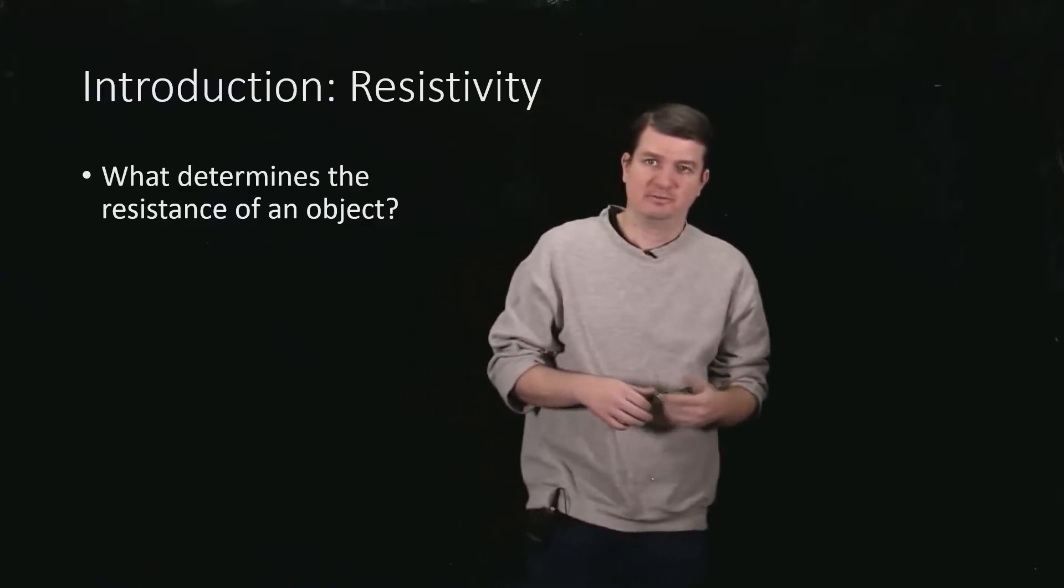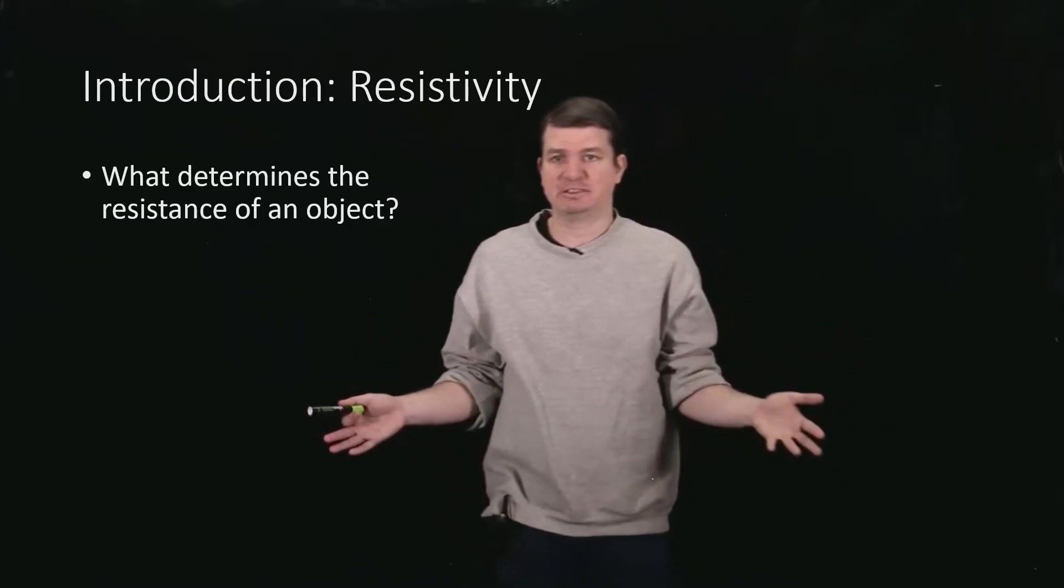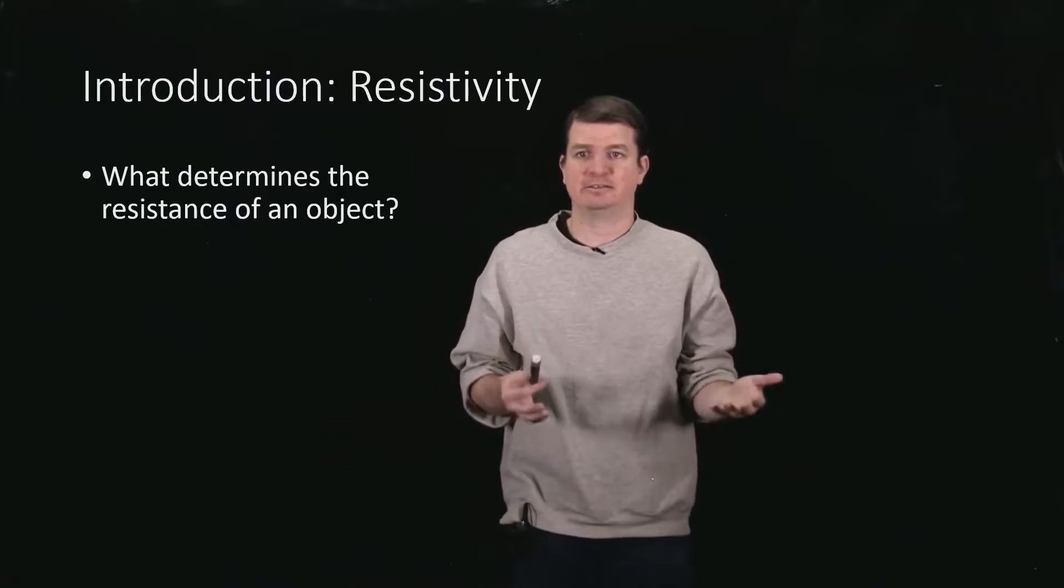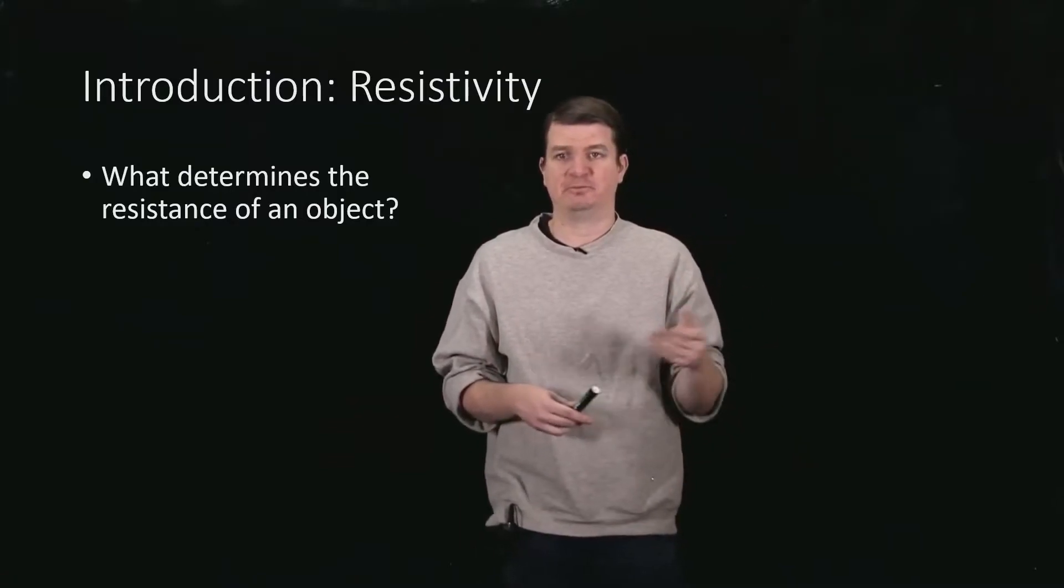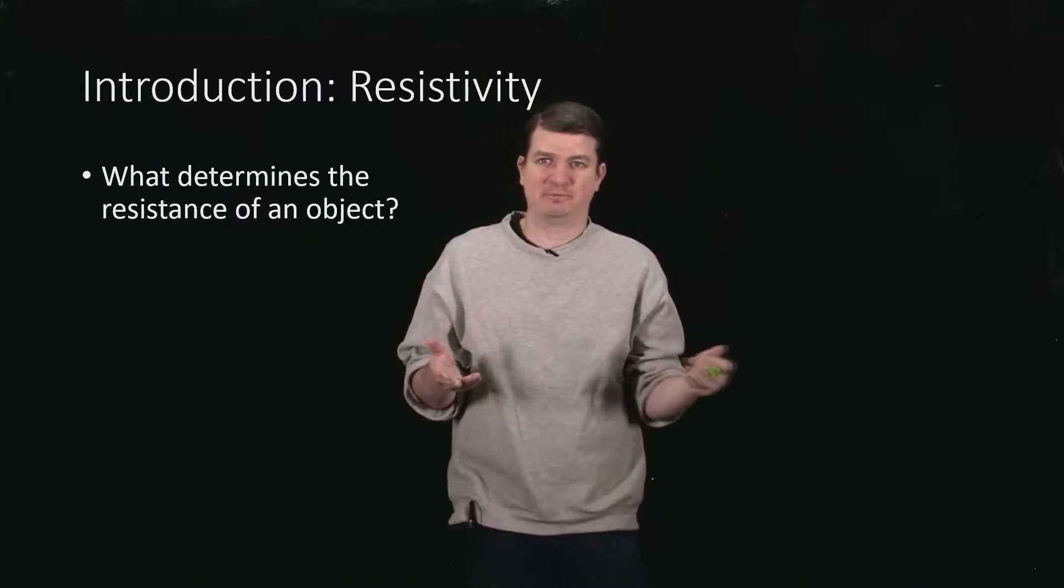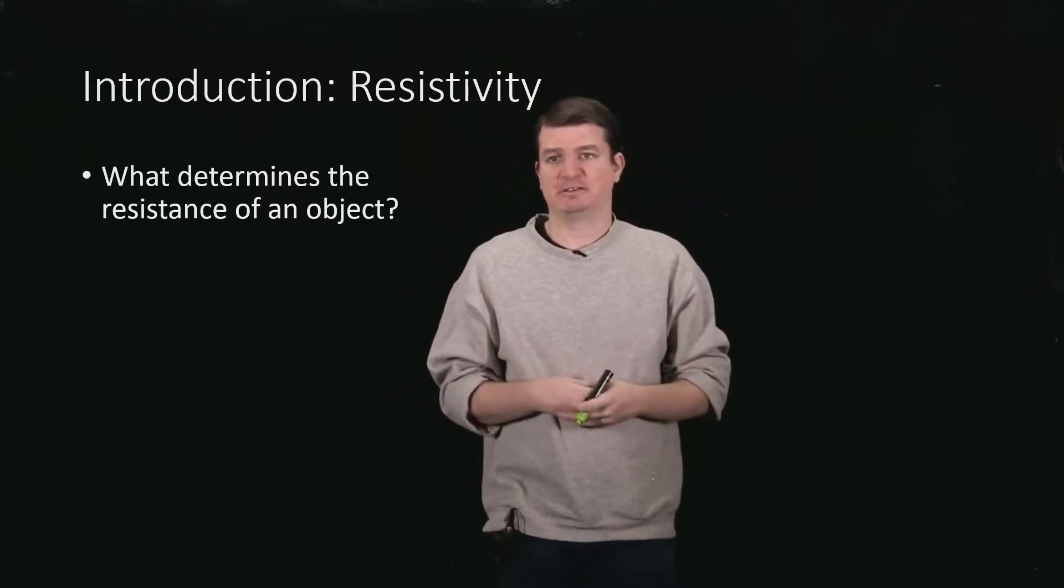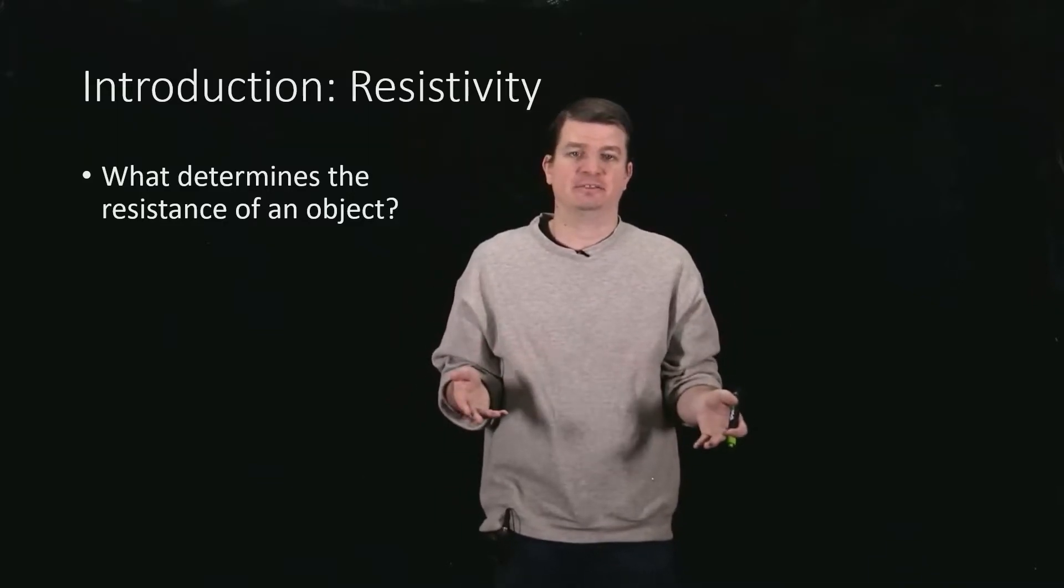So what could resistance depend on? Let's think about it. First things first, it certainly depends on the material. We know that as we swap materials, then that is fundamentally changing the way in which the current can flow through those things. That's really coming from various properties of the material, for instance, the number of valence electrons. The more you have, the easier it is to conduct a current. So it certainly depends on the material, but that's not the end of the story.